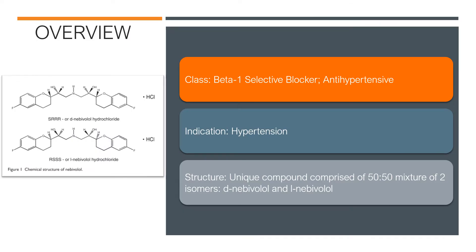I will begin by going over a brief overview of Bystolic. Bystolic is in the drug class beta-1 selective blocker, and it is an antihypertensive agent. The indication is hypertension. It has a unique structure because it is comprised of two isomers, D-nebivolol and L-nebivolol.